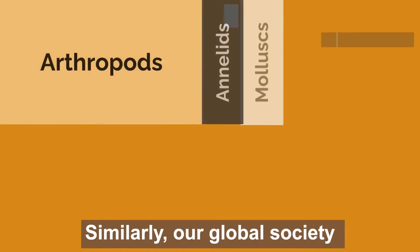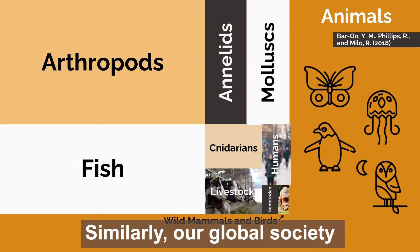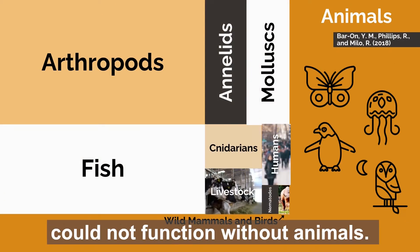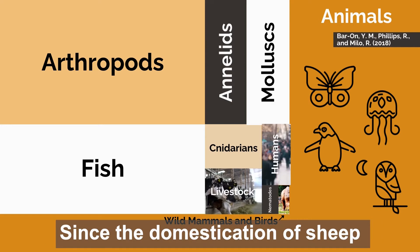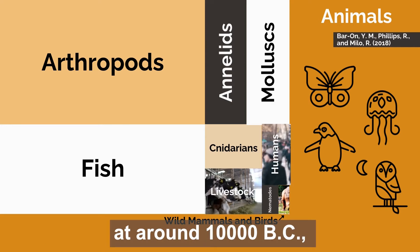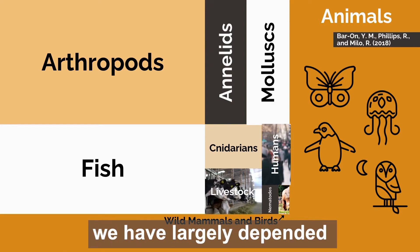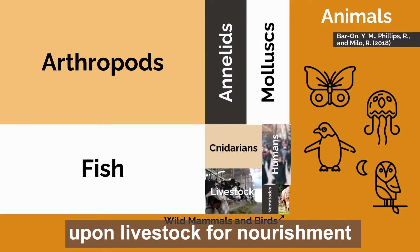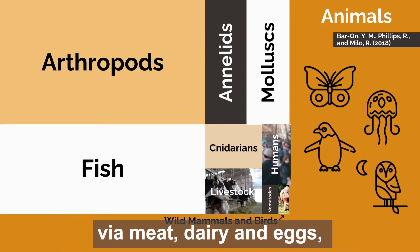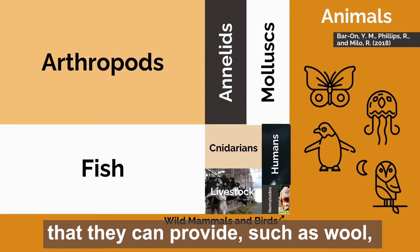Similarly, our global society could not function without animals. Since the domestication of sheep at around 10,000 BC, we have largely depended upon livestock for nourishment via meat, dairy and eggs, as well as other goods that they can provide, such as wool, leather and honey.